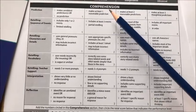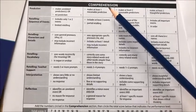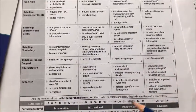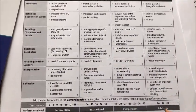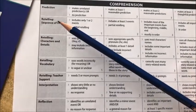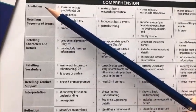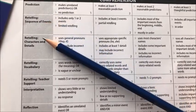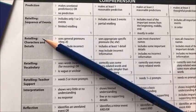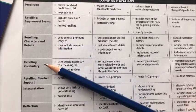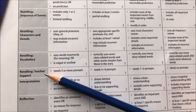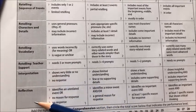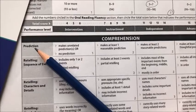On the continuum for comprehension, we're also going to be looking at discrete skills in the intervention, instructional, independent, and advanced levels. The discrete skills in comprehension include prediction, retelling sequence of events, retelling characters and details, retelling vocabulary, retelling teacher support, interpretation, and reflection.